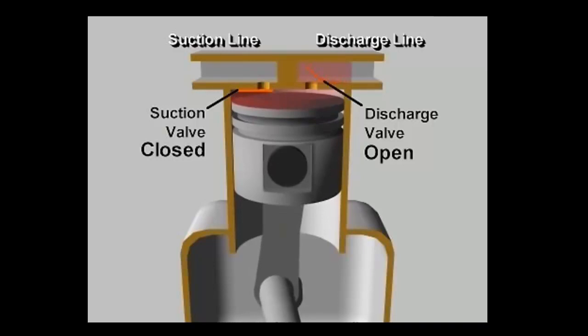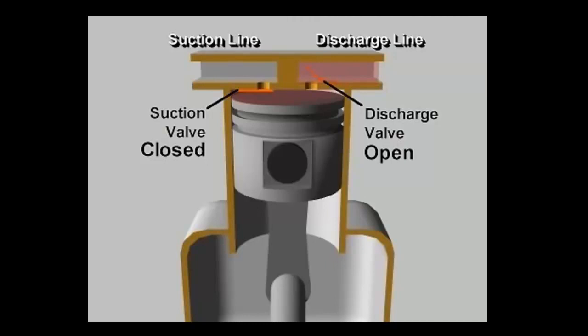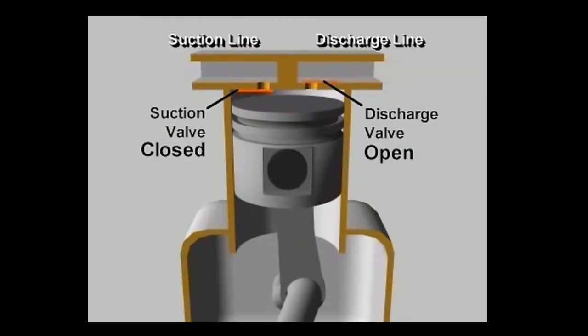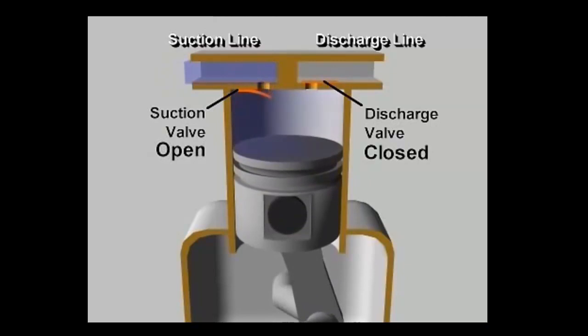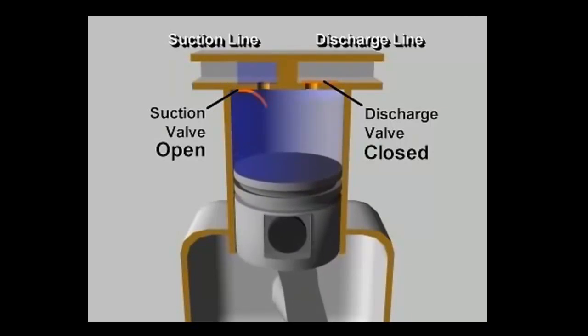This continues until the piston reaches the top of its stroke and most of the compressed vapor has been expelled into the discharge line. When the piston begins its downward stroke, the discharge valve closes. The complete cycle then repeats during each revolution of the crankshaft.